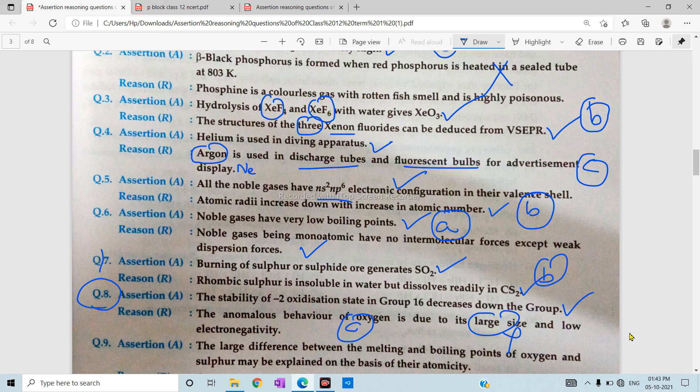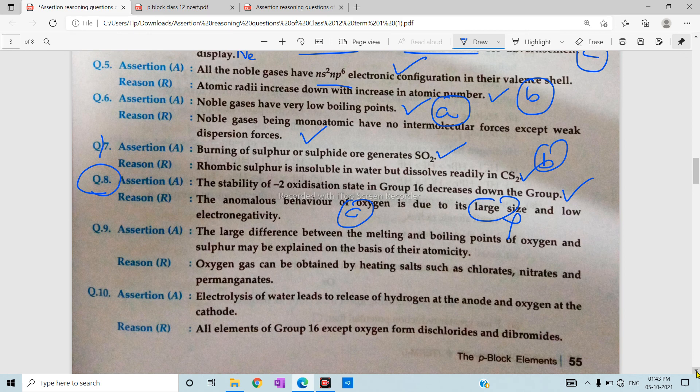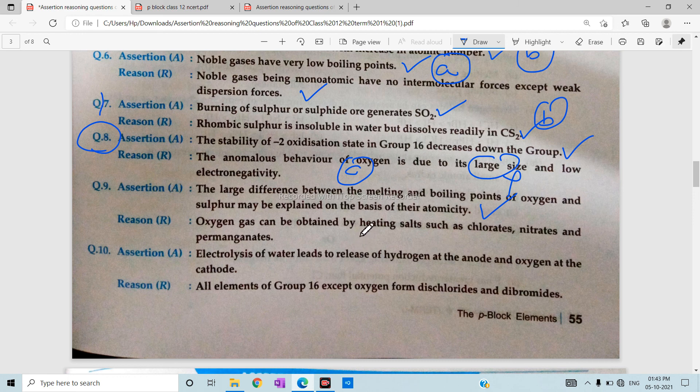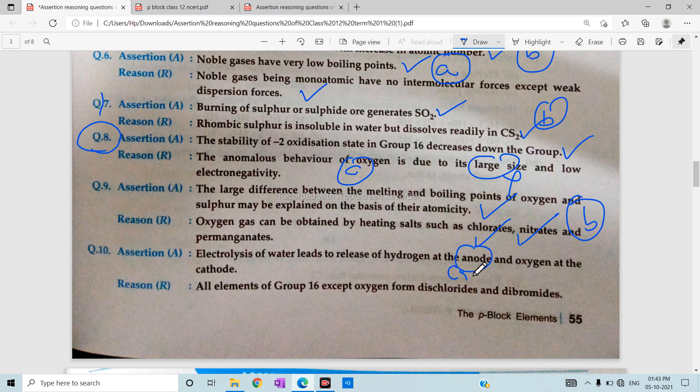After that, we say that the boiling point or melting point of oxygen and sulfur may be explained on the basis of their atomicity. This is correct. And this statement is also correct.